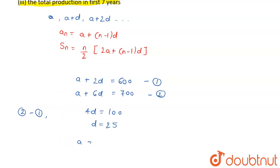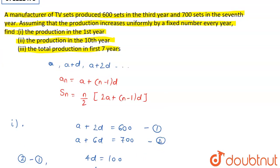So, A + 2D = A + 50 = 600. Or my production in the first year was 550. This is going to be the answer of our first part, the production in the first year.